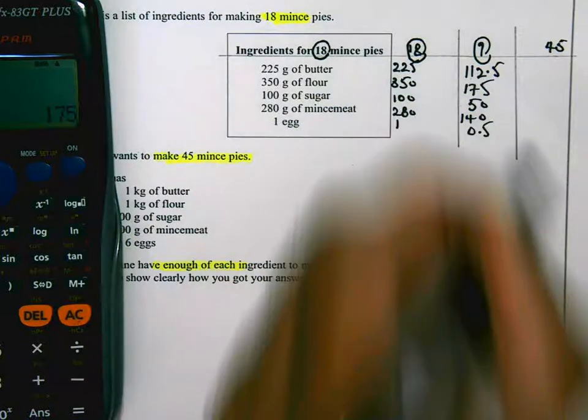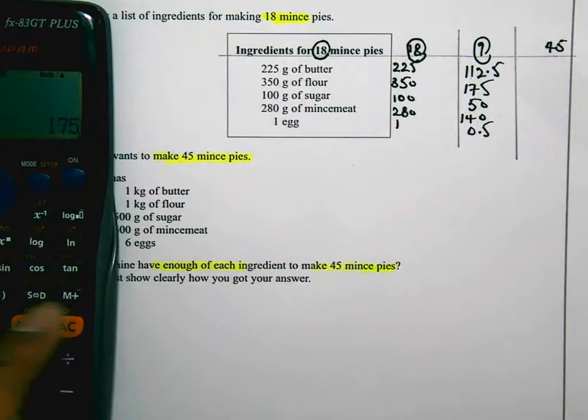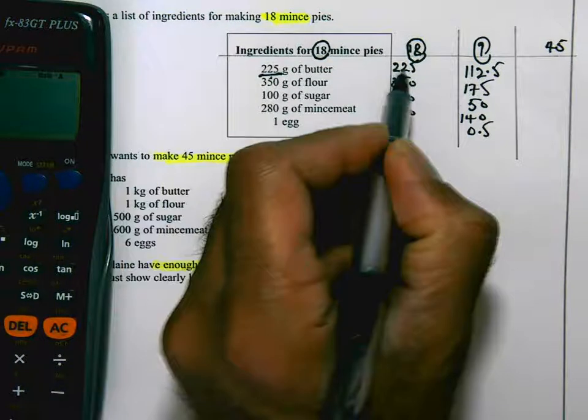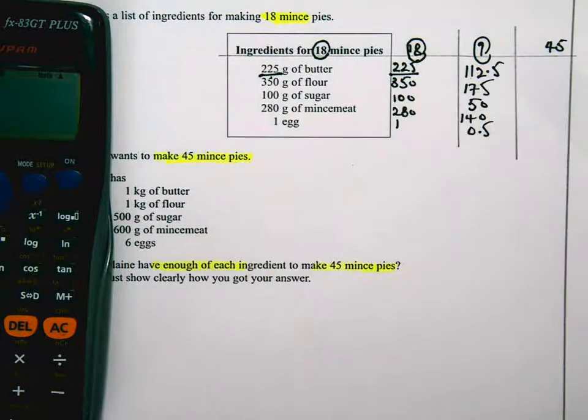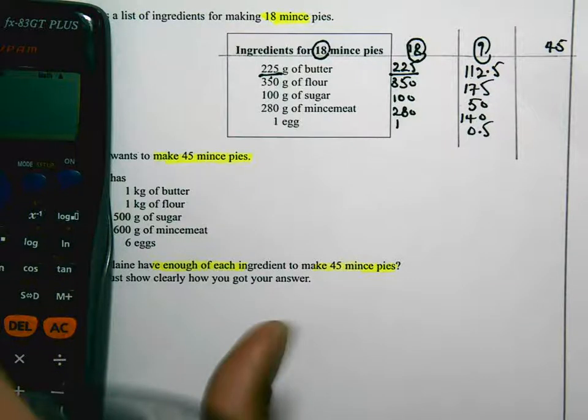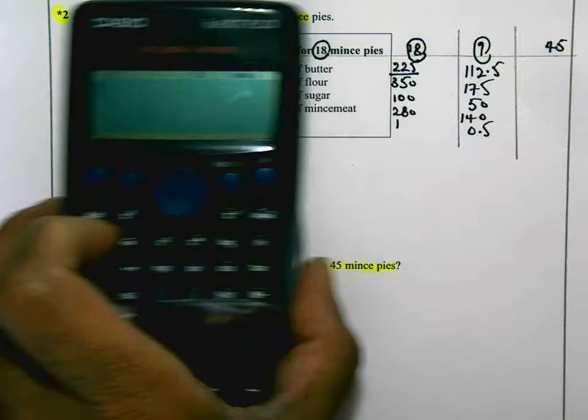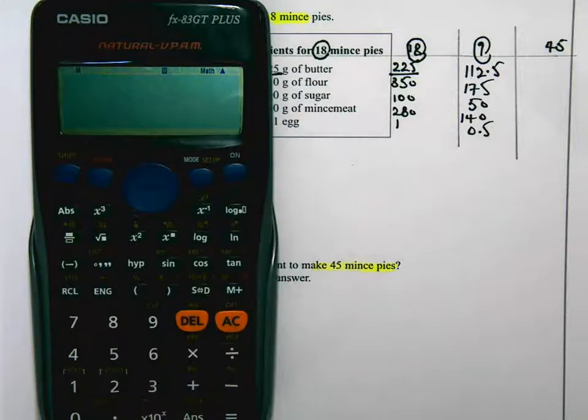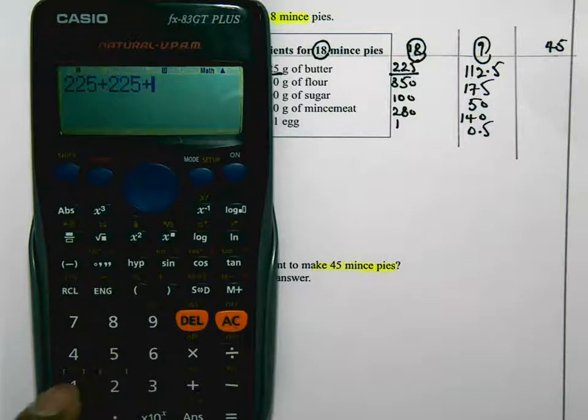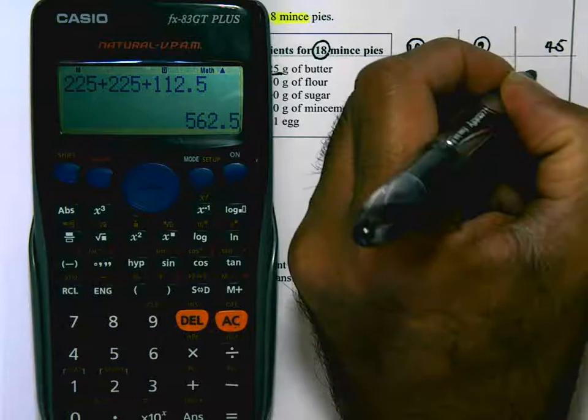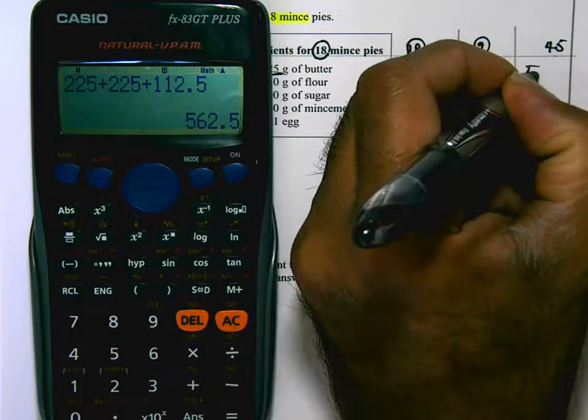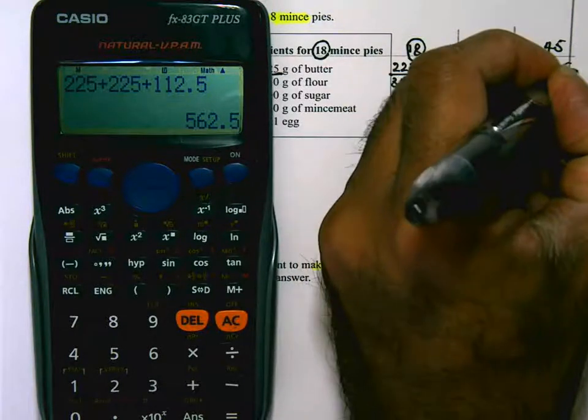Now what I'm going to do is to add these three: 225, 225, and 112.5. And that's going to give me the ingredients for 45 mince pies. So here we go. 225 plus 225 plus 112.5 equals 562.5 grams of butter. So here is what she needs.